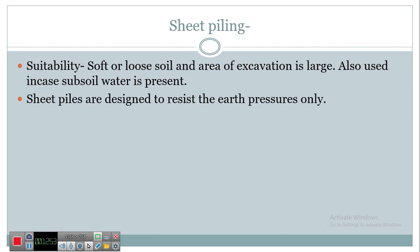Sheet piling is the last method used as part of timbering and strutting to support the excavation. Sheet piling is used where the soft loose soil area of excavation is too large, or where subsoil water is also present. Sheet piles are designed to resist earth pressure only. They are driven into the soil by pile-driving equipment around the boundary of the excavated area to a depth more than the excavation, which may vary from 10 meters to 30 meters.